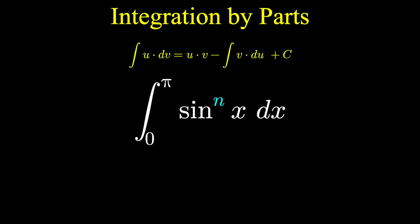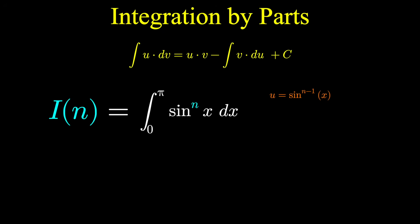Let's call this integral I(n) and do the integration by parts. Let u be sin^(n-1). That would make du (n-1) times sin^(n-2) times cos(x) dx by the chain rule. We also need to pick dv. dv is what's left over. It'll just be sin(x) dx since we used sin^(n-1) as u. We antiderive this to get v. The antiderivative of sin(x) would be negative cos(x).